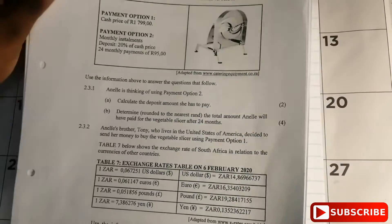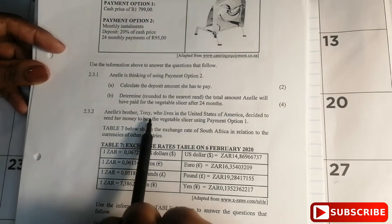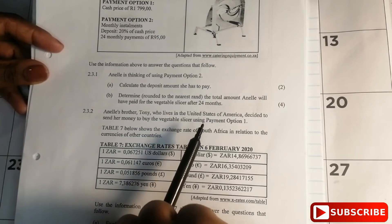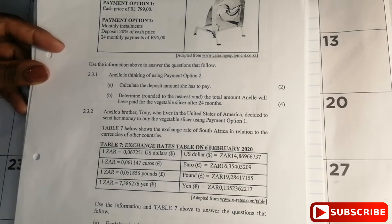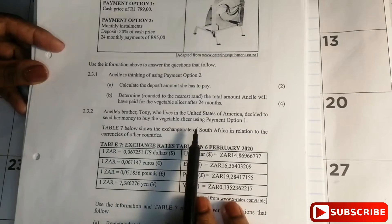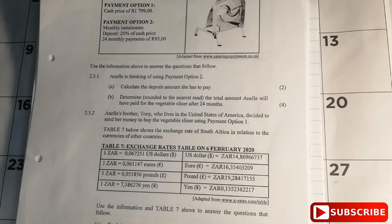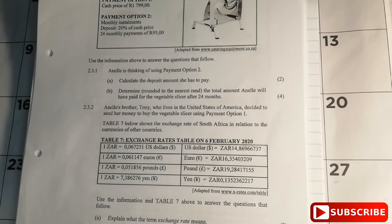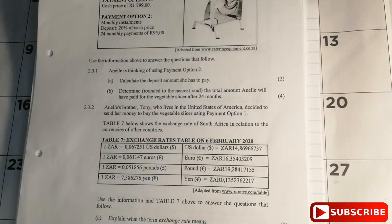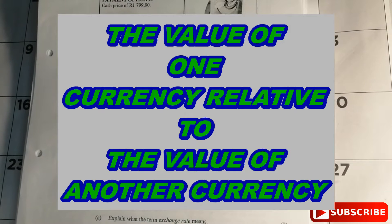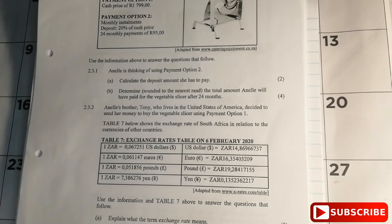Question 2.3.2: Anayla's brother Tony, who lives in the United States of America, decided to send her money to buy the vegetable slicer using payment option one. Table 7 shows the exchange rate of South Africa in relation to the currencies of other countries. The exchange rate is the value of one currency relative to the value of another currency.